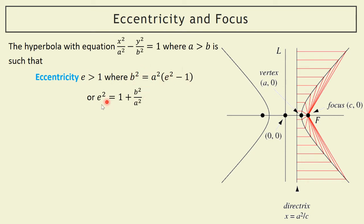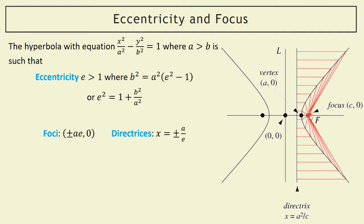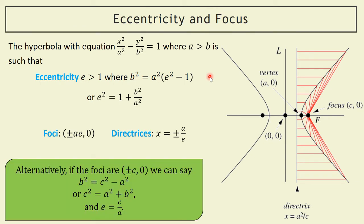Just rearranging: if I divide through by a squared to get b squared over a squared and add 1 to the other side, I'm left with e squared. So we can use that to work out the eccentricity: just do 1 plus b squared over a squared and square root it. For the foci and directrices, once we know the eccentricity, a times the eccentricity — plus or minus — gives us the position of the foci. Because e is bigger than 1, the focus moves beyond the vertex, and the directrices are a over e, so they move back towards the origin.